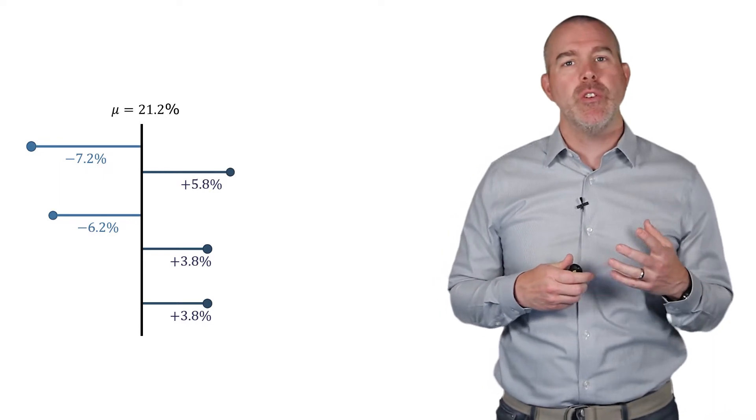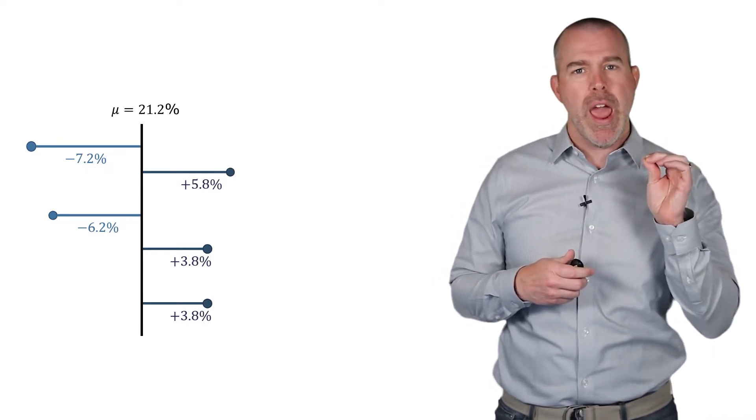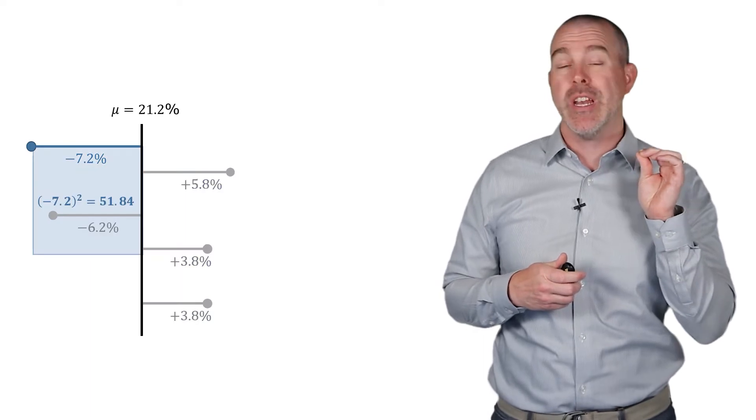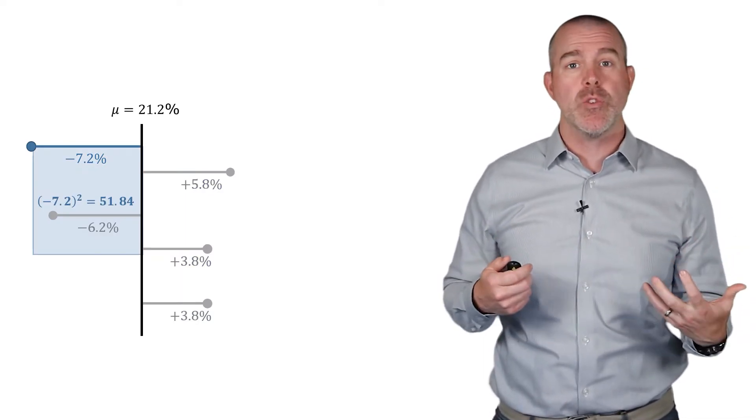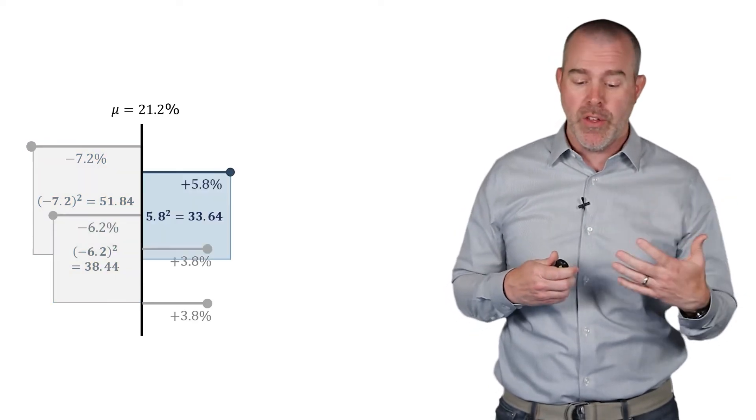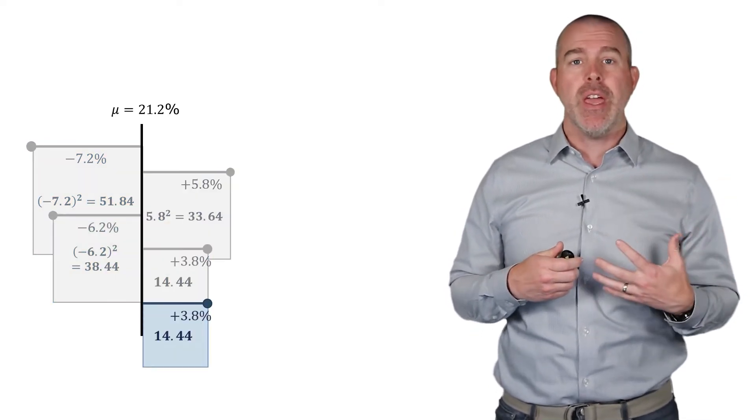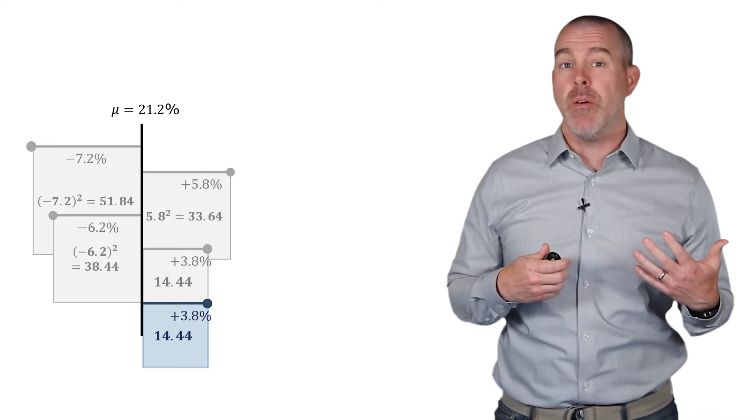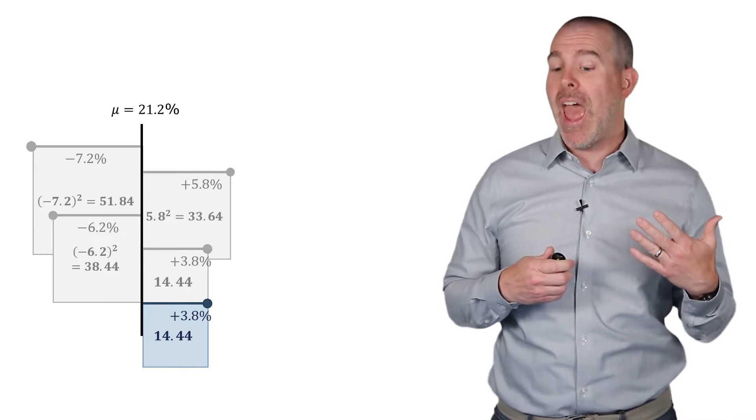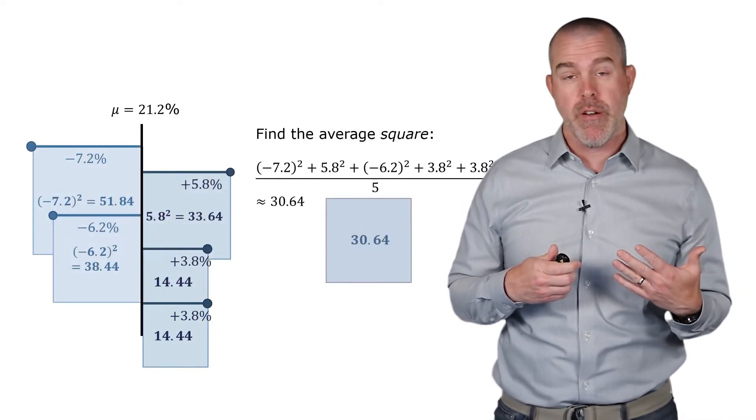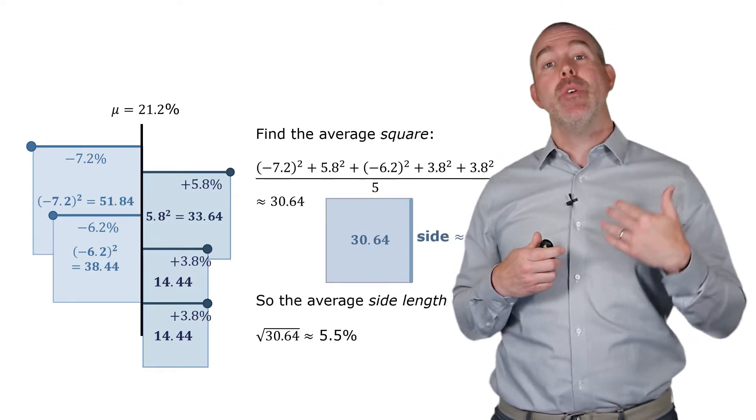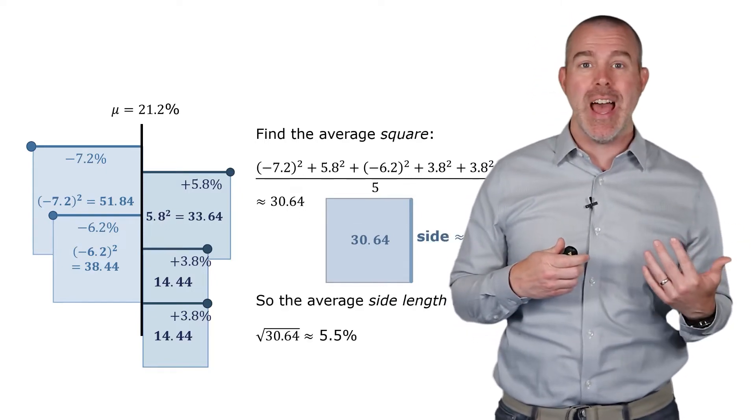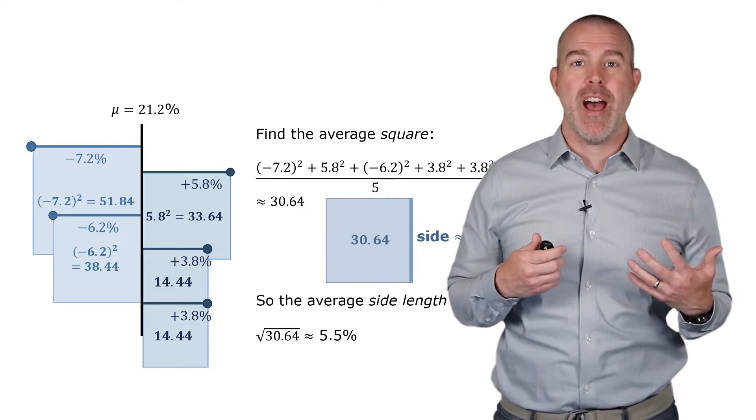What we're going to do instead, and kind of be patient here and work with me, is for each of these we're going to square that number. So the negative 7.2, we're going to square it and get 51.84. Think of that as the area of a square. And we'll do that for all the other four. And we get all of these squares. What we can do instead is find the average square. That's 30.64. And then take the square root to find the average side. And that's about 5.5%.